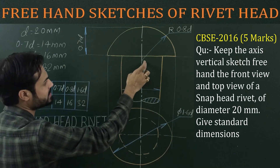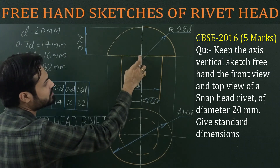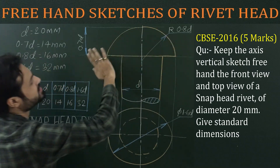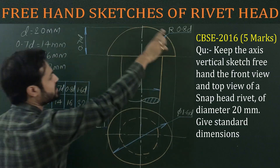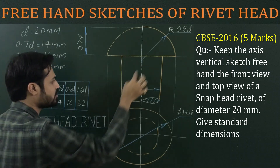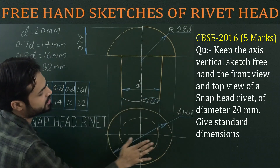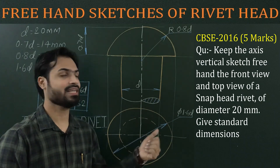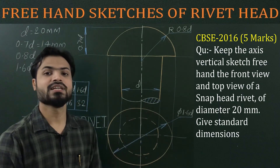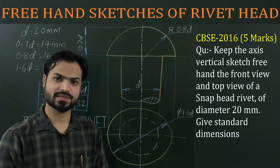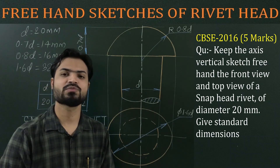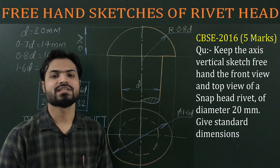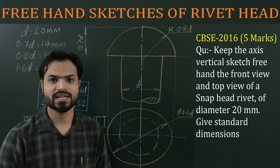Locate the center at 0.1D from the top limit or 0.8D from the bottom limit. Draw the upper semicircular part — it is approximately semicircular — then draw the body part and the top view. Please do not use any instrument for measurement or construction if you are a Class 12 student. If you have any doubt or problem in any topic of engineering graphics or machine drawing, please write your comments in the comment box. Thank you.